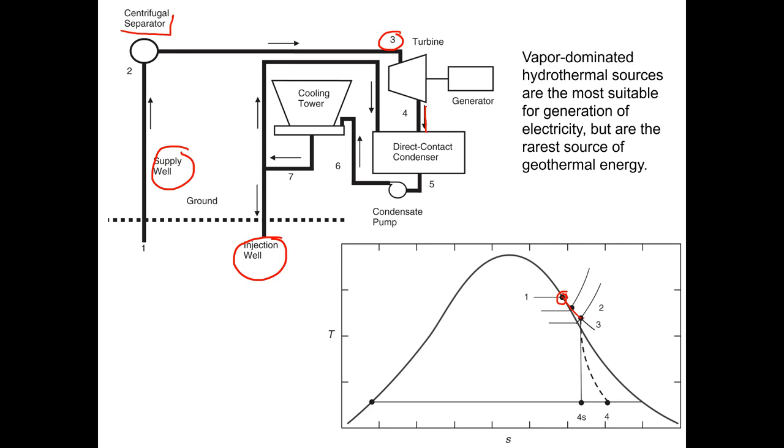Then when it hits the turbine, it's going to go through a turbine process to extract work, and then it'll come out of the turbine at state four. This is the basic part of the process that produces power.